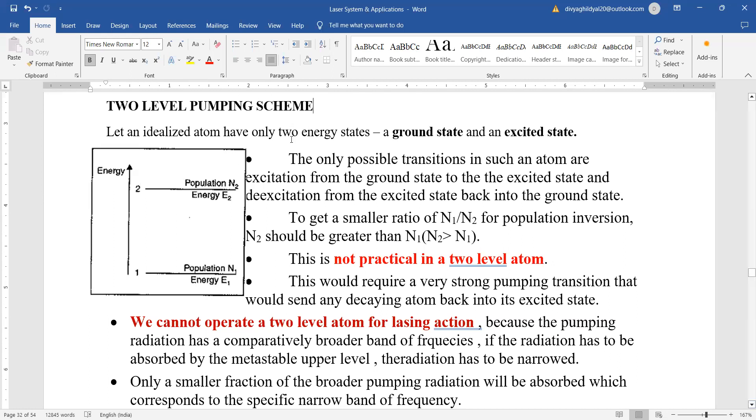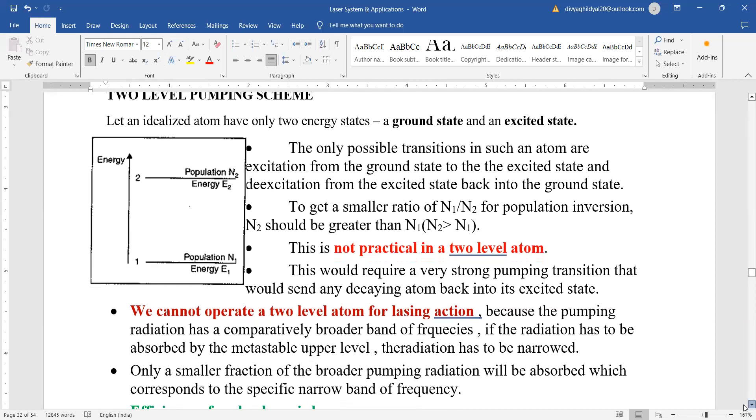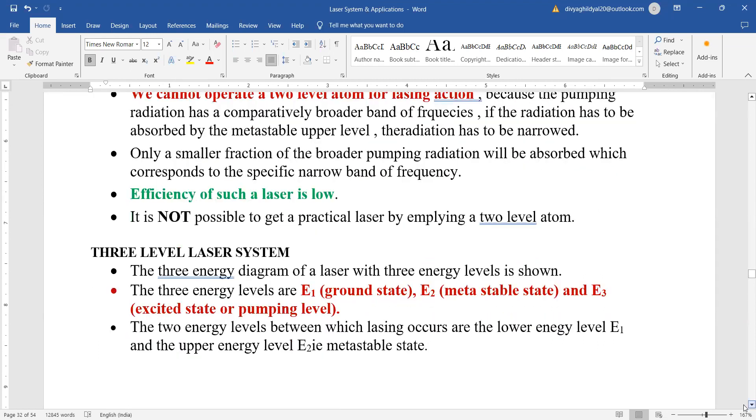An idealized atom will have only two energy states, a ground state and an excited state, and the only possible transition will be between these two states. If we have to achieve population inversion which is a basic condition for laser action, we cannot do it with two level atom. We need a third metastable state. Hence two level laser fails in giving a laser light. Obviously efficiency of such a laser is also very low. This is asked a lot in section A.